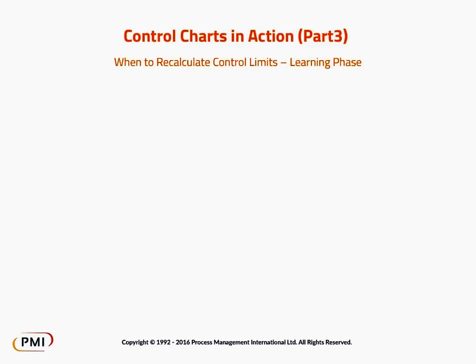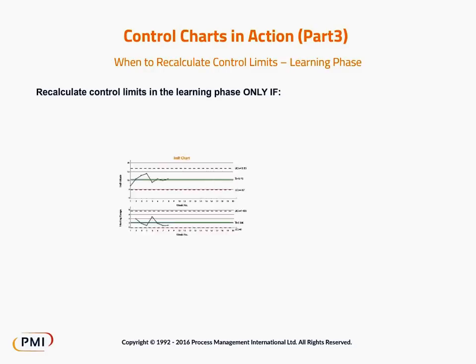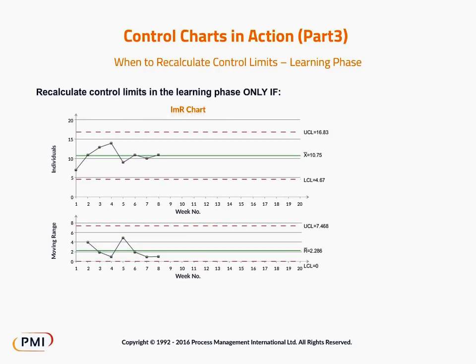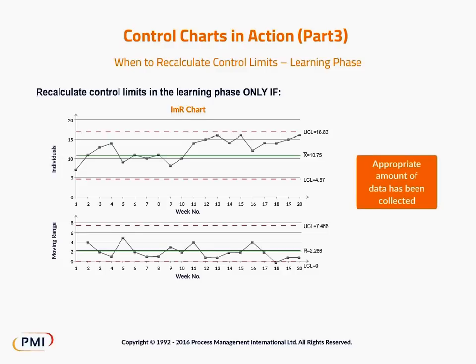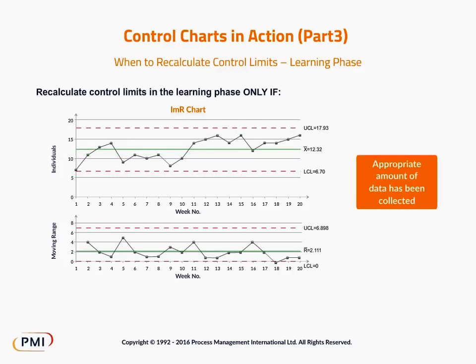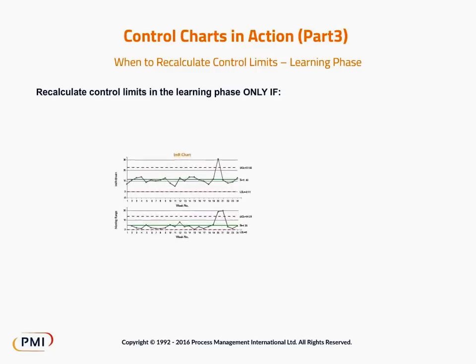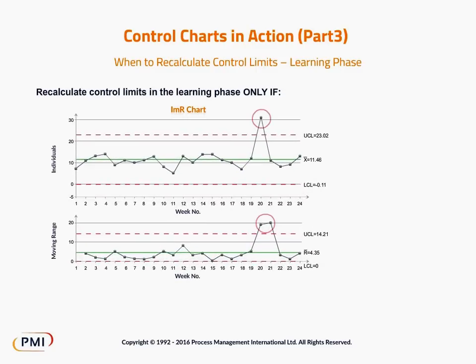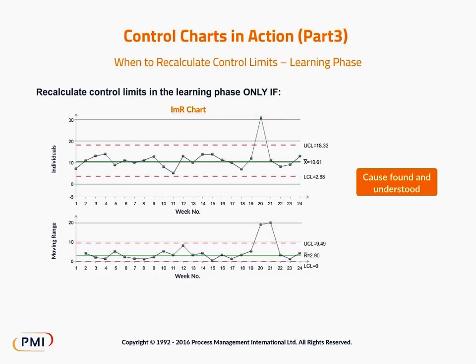In the learning phase, the control limits can be recalculated under the following conditions. First, if the initial chart is created from a small amount of data, you can recalculate the limits once an appropriate amount of data has been collected. Second, if an assignable cause is found in the learning phase data and it is then investigated and understood, you can recalculate the control limits by omitting this point from your calculation, whilst retaining it on the chart.